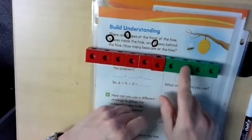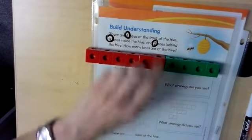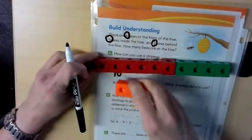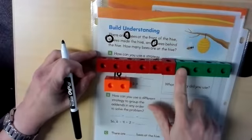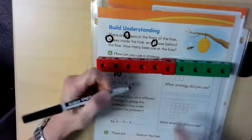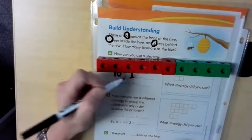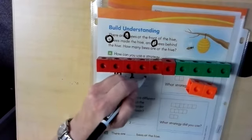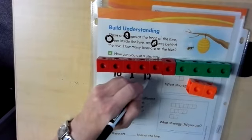Six, seven, eight, nine, ten. I've made a group of ten, haven't I? Plus, remember there were two more bees behind the hive. Six, ten, eleven, twelve. So we're going to add plus two more. Ten plus two is going to equal twelve.